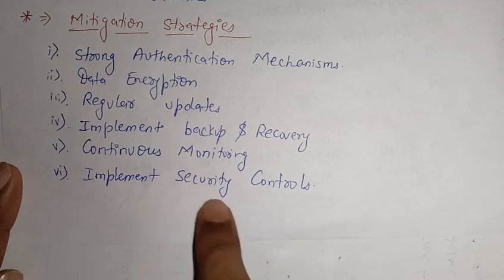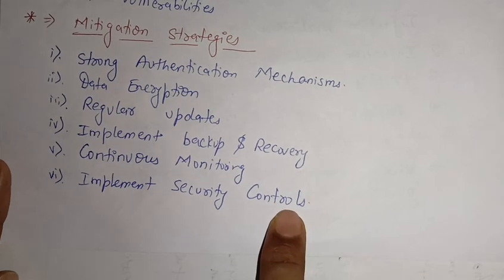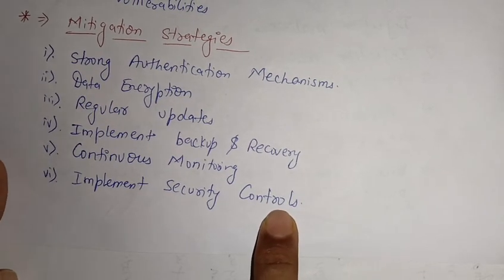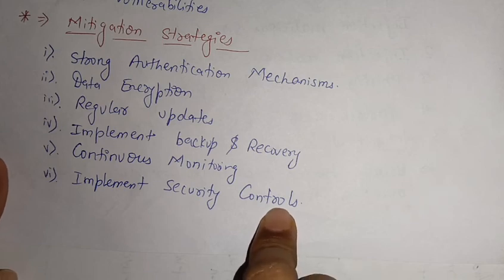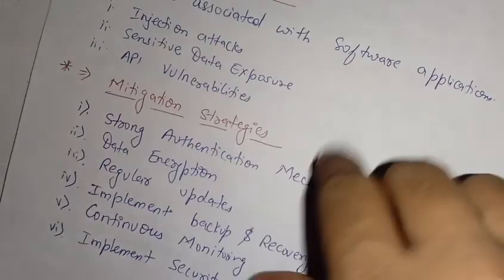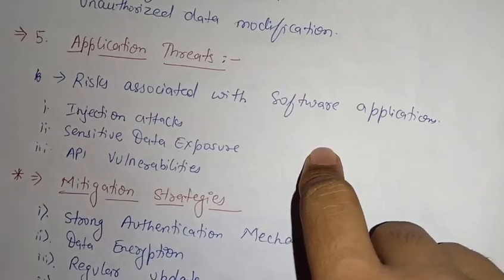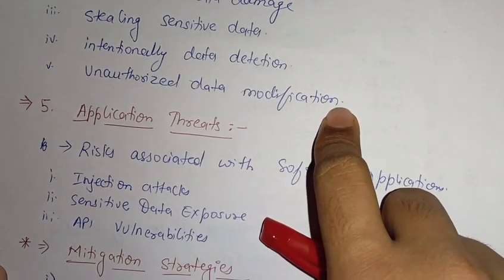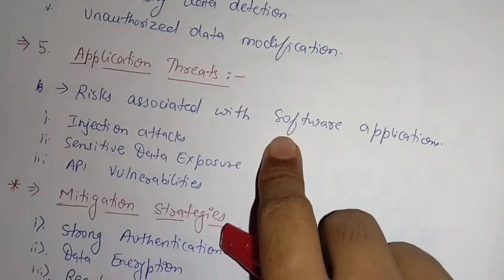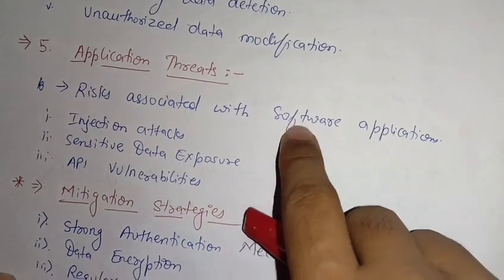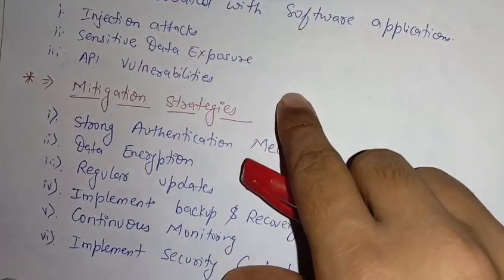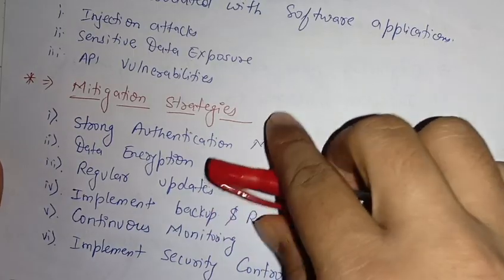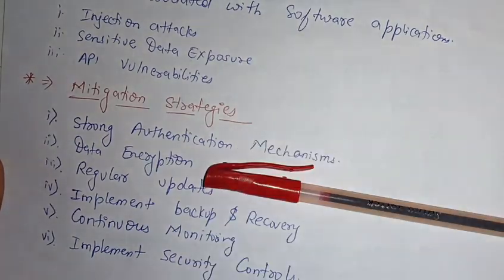The sixth strategy is implementing security controls — if they have security controls over a certain database or software, there is a very low chance of security breaches. So we have learned about database threats — the five threats that can affect an organization — and the strategies through which we can secure our database. Thank you for watching this video, thank you so much.